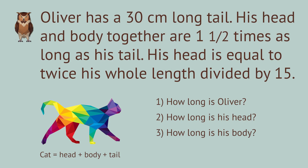Oliver's head and body together are 1.5 times as long as his tail. His head is equal to twice his whole length divided by 15. How long is Oliver the cat? How long is his head? How long is his body?